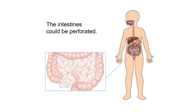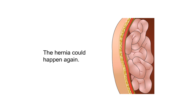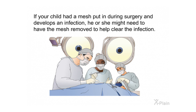The intestines could be perforated. Damage to these structures could lead to permanent damage, and your child may need another operation. In extremely rare cases, death may result from these complications. The hernia could also happen again. If your child had a mesh placed during surgery and develops an infection, he or she might need to have the mesh removed to help clear the infection.